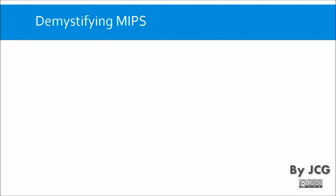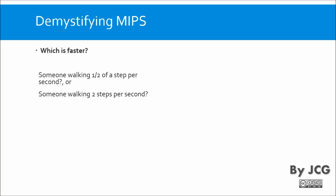Now, what is MIPS? Let's see an example. Which do you think is faster: someone walking half a step per second, or someone walking two steps per second? You would be inclined to think that someone making two steps per second would be faster.